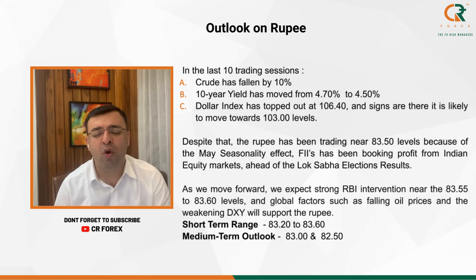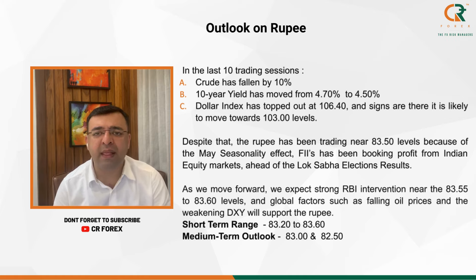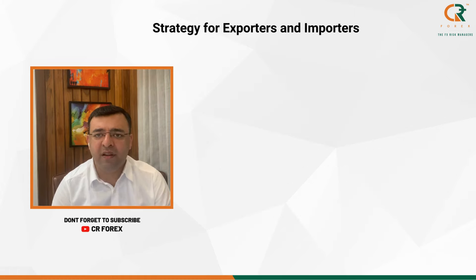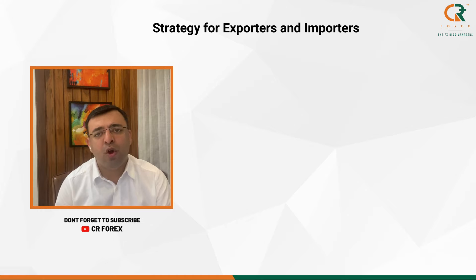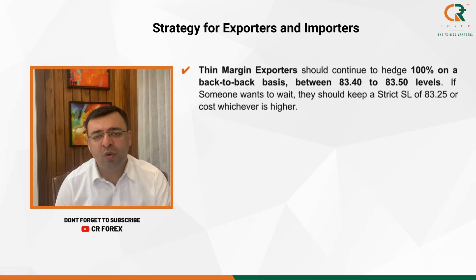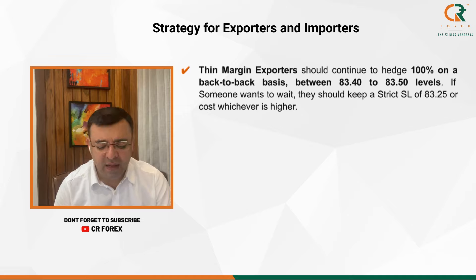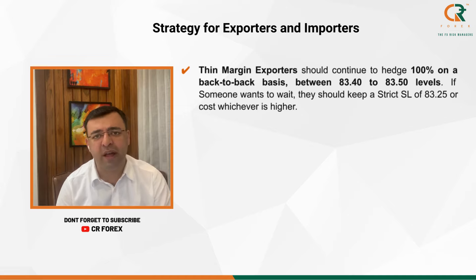The short-term range for the Rupee remains between 83.20 to 83.60. The medium-term outlook remains the same — we are expecting the Rupee to move towards 83 and 82.50 in coming days. For thin margin exporters like agri or chemical exporters, we suggest they continue to hedge 100 percent between 83.30 to 83.45. If someone wants to wait, they should keep a strict stop loss at 83.25 or their costing, whichever is higher.